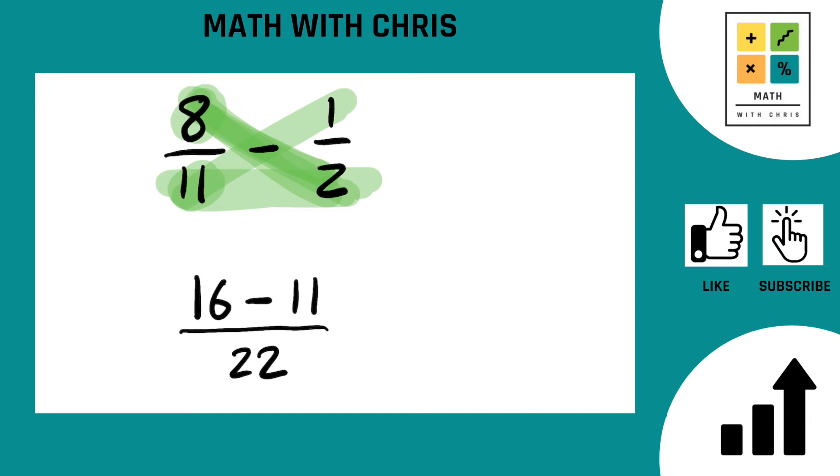And now all we've got to do is simplify the fraction nice and easy. 16 minus 11 gives us 5. The bottom stays 22. Nothing left to do on the bottom.